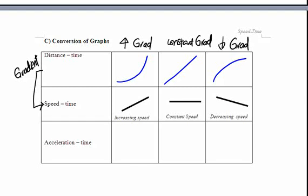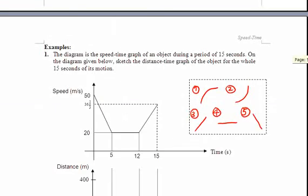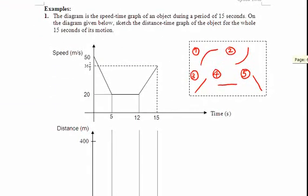Let us now take a look at the example. The diagram is a speed time graph of an object during a period of 15 seconds. On the diagram below, sketch the distance time graph of the object for the whole 15 seconds of its motion.